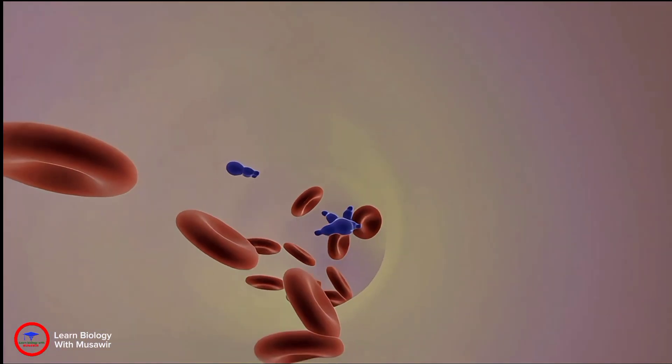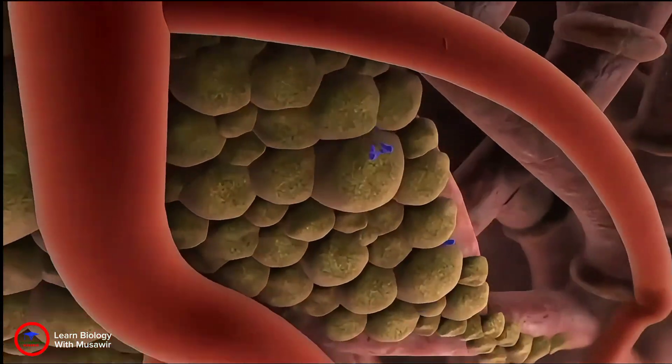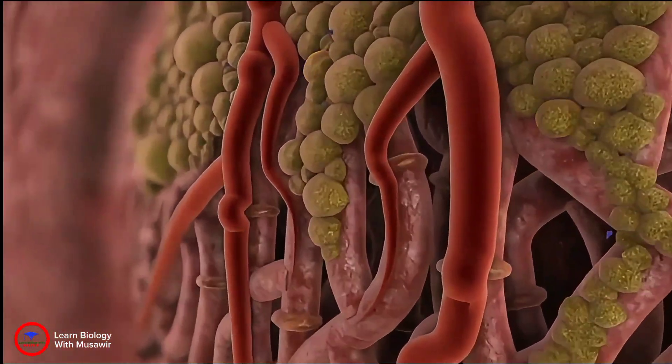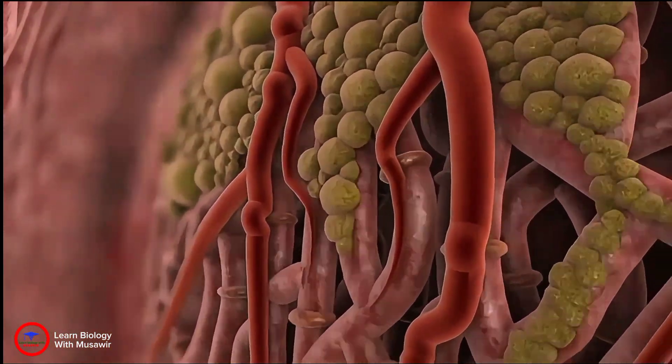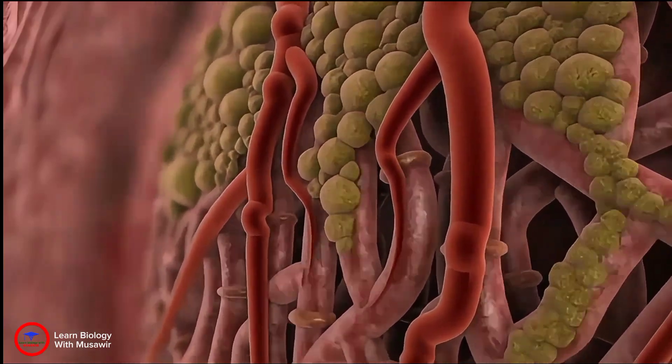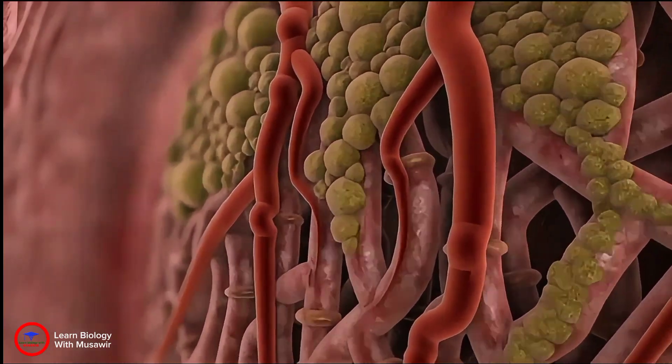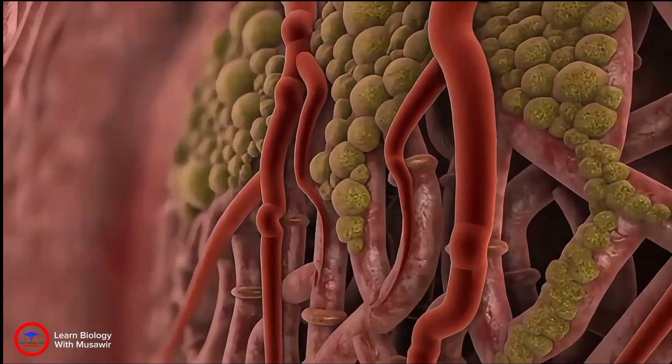When this signal reaches the heart, it docks on beating heart cells. Their response is to beat faster. Blood pressure goes up and the signaling molecule is rushed on to still more cell types around the body.